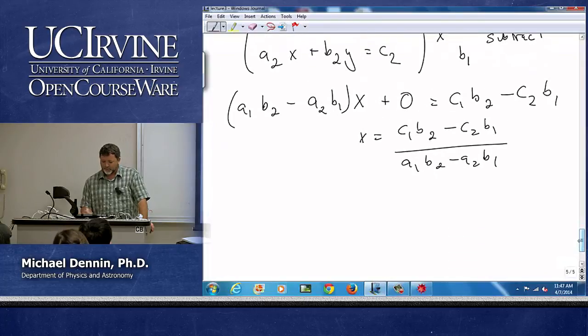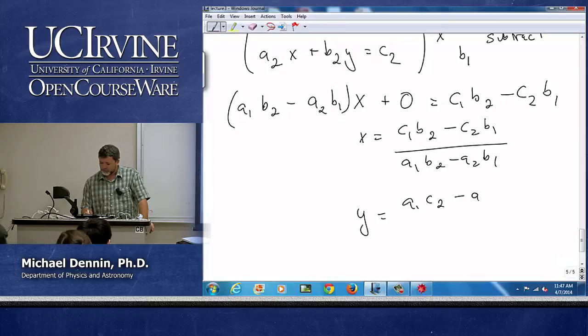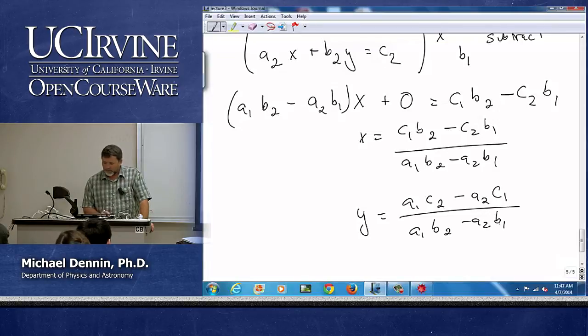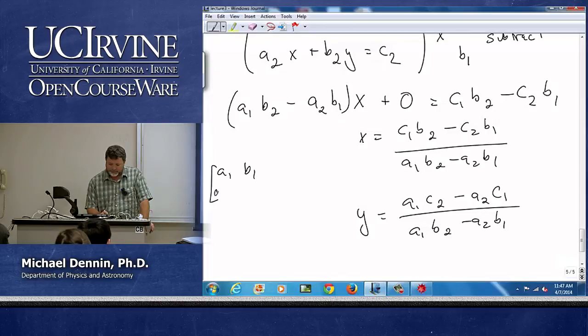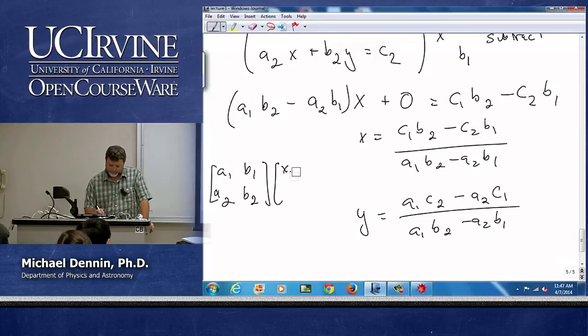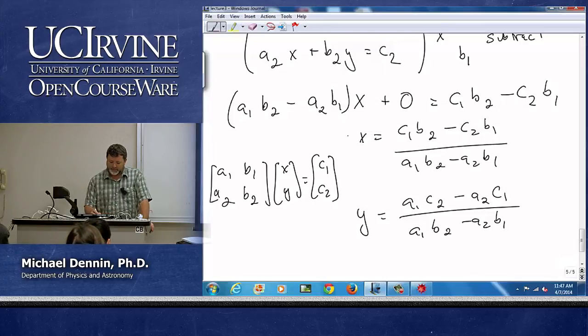So x equals what is clearly a ratio of two determinants. And by analogy, y will also be a ratio of two determinants. And if I write this equation as a matrix equation, what do I immediately see about the solution?